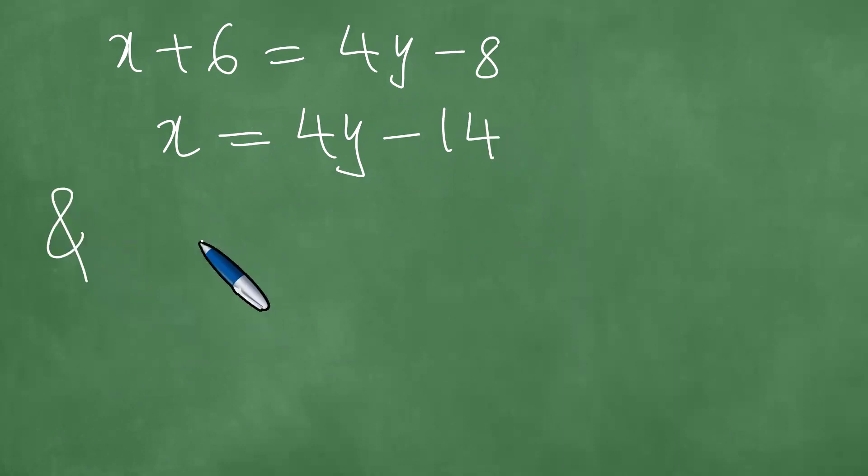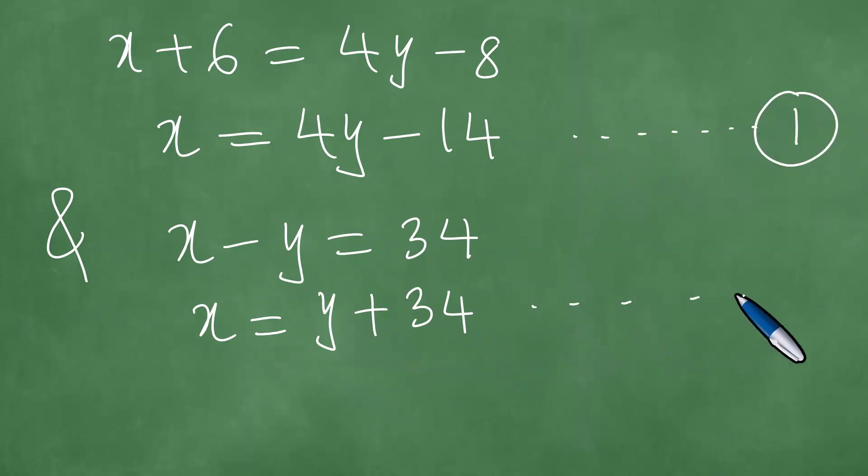Simultaneously, this is true with the difference. X minus Y, which is 34. And transposing the Y to the other side gives us 34. So we have the first equation, and this becomes the second equation.